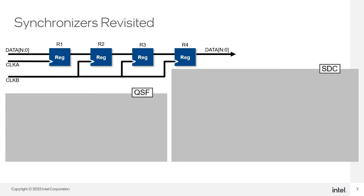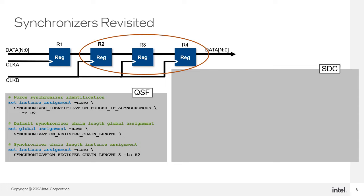Let's go ahead and start building our own synchronizer. The method I will go over first is called an open-loop solution. I will now go into more detail on the assignments and SDC commands needed to create a synchronizer. The software tools automatically detect synchronizer circuits, but we can also manually tell the tools about the synchronizer. The synchronizer identification 'forced if asynchronous' assignment tells the tools that it is a synchronizer chain if each stage has a clock that is asynchronous to the preceding register, which means the tools will place the synchronizer registers as close together as possible.